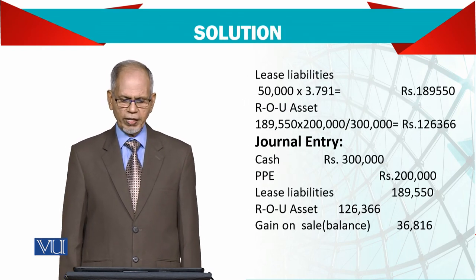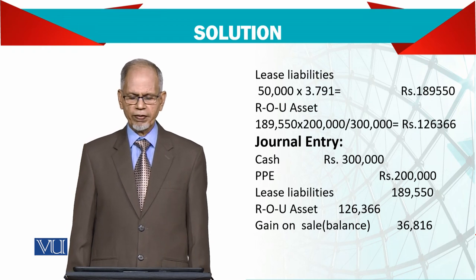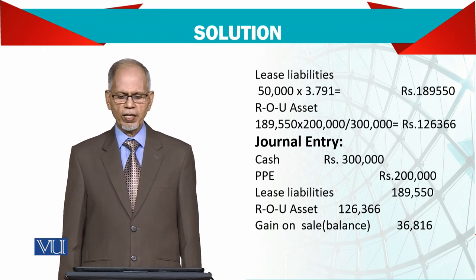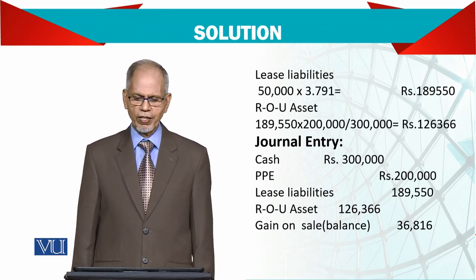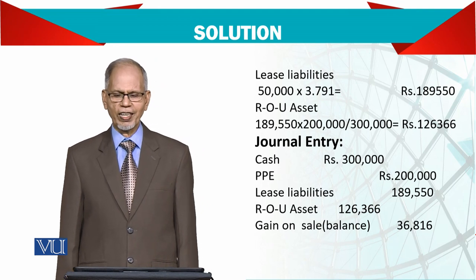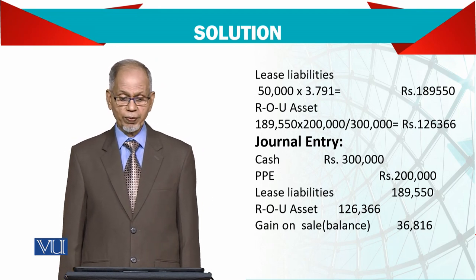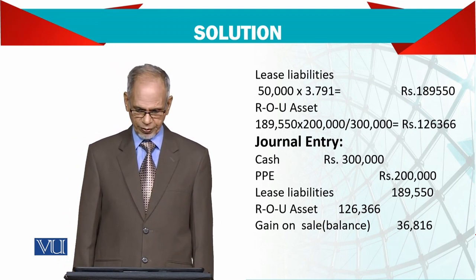The lease liability is very simple: 50,000 annual payment multiplied by the factor 3.791 gives you 189,550 — that is your lease liability.